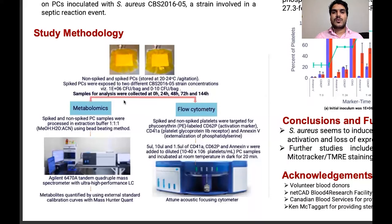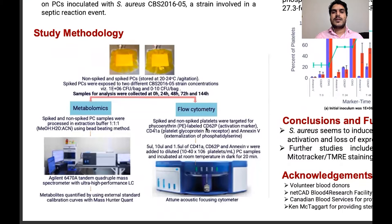Samples were collected at 0, 24, 48, 72, and 144 hours. For metabolomics analysis, we processed the spiked and non-spiked PC samples for metabolite extraction using the bead-beating method, and then metabolites were quantified using a mass spectrometer equipped with high-performance LC. For flow cytometry analysis, we used two markers: CD41-alpha, which is a platelet glycoprotein marker, and CD62P, which is an activation marker.